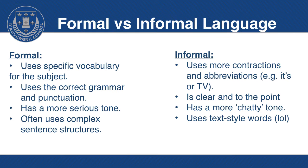Let's have a look at formal versus informal language. Formal language uses specific vocabulary for the subject, uses correct grammar and punctuation, has a more serious tone, and often uses more complex sentence structures. Informal language uses more contractions and abbreviations, it is clear and to the point, has a more chatty and relaxed tone, and it can use text words — like text talk, such as lol and haha — whereas that would be a big no-no in formal writing.